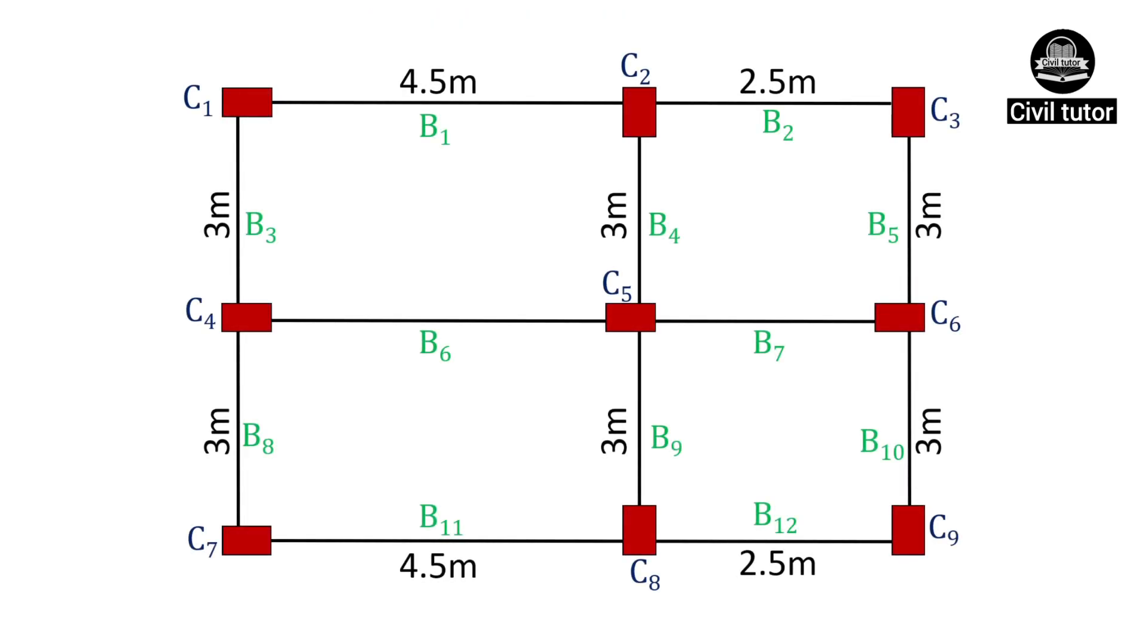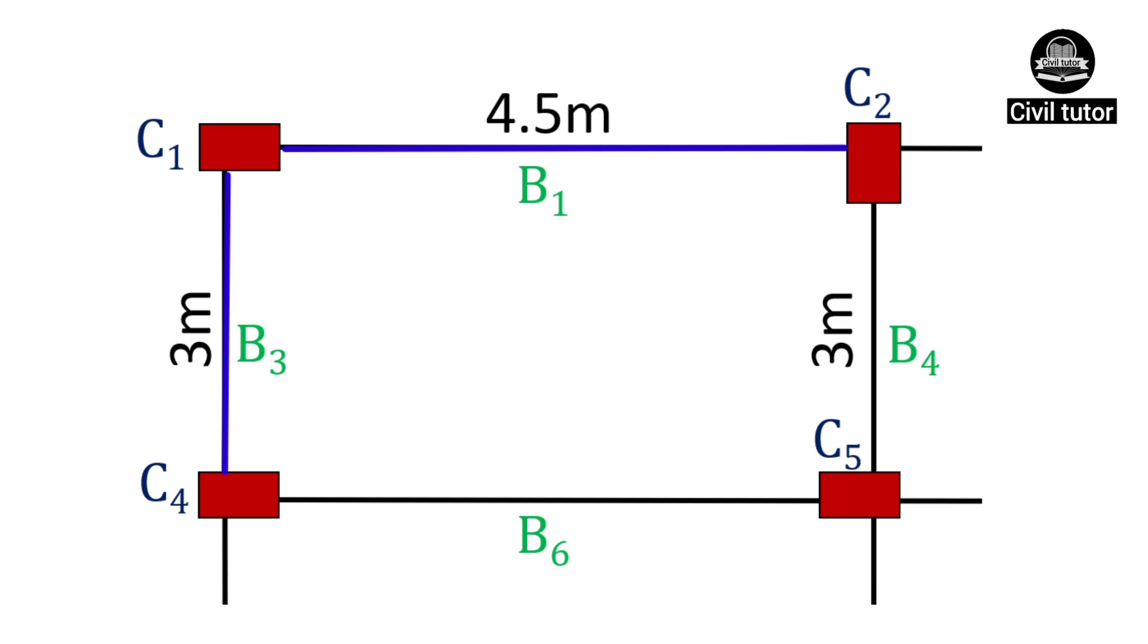To decide the orientation of column 1, we need to identify the major axes of bending for this column. As you can visualize from this picture, column 1 is connected by the beams B1 and B3, and the span of B1 is larger in comparison to B3. Hence, the moment created by B1 will be greater than that of B3, which means the major axes of bending will be along the span of B1. Therefore, the depth of column 1, i.e. its shorter side, will be aligned perpendicular to the span of B1.